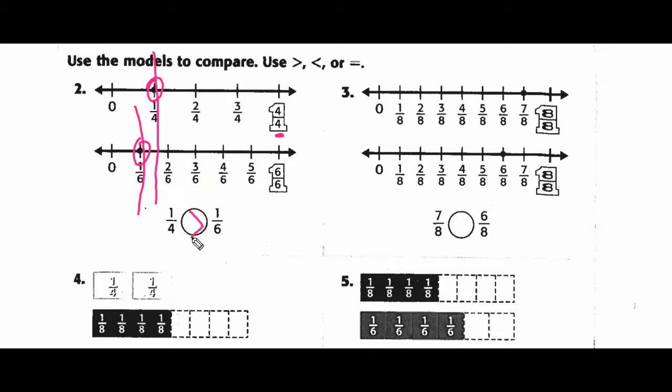Number three, here you have seven over eight, or seven-eighths, and here's six-eighths. When my denominators are the same, I'm just looking at the numbers at the top. So, is seven greater than, less than, or equal to six? It's actually greater than.